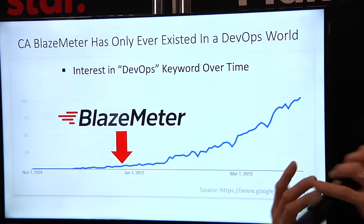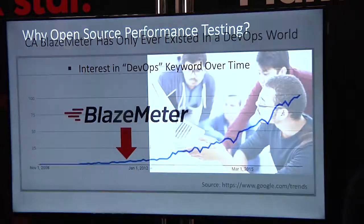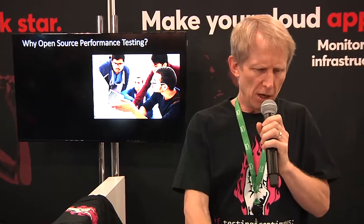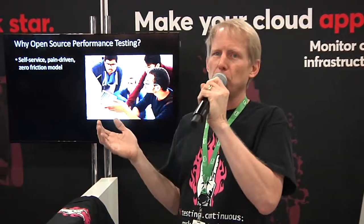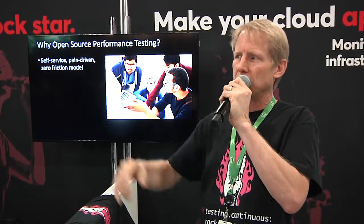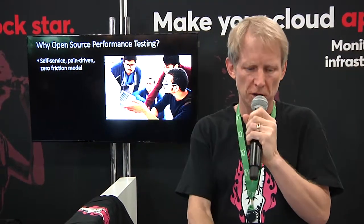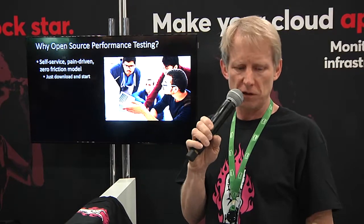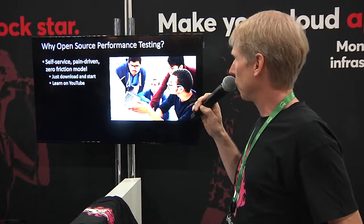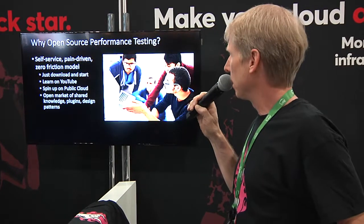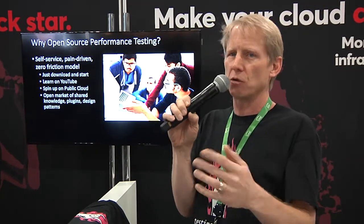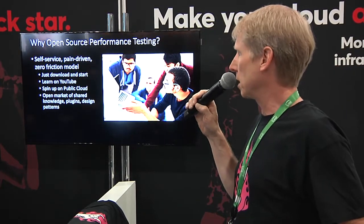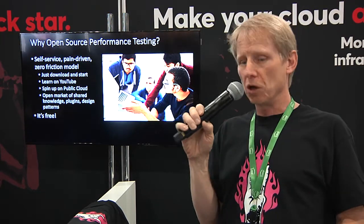It's like in our blood. A big part of that was also really being part of open source. You might ask, well, why open source performance testing? The deal is that developers are taking more control of what they were doing, or teams were shifting out to the edge and not wanting to be dependent on a central organization to do their testing. So they actually just went out and got open source stuff. It was easy — zero friction self-service. Download and start, learn on YouTube, spin it up in a public cloud, and there's an open market of shared knowledge, plugins, and design patterns. People create plugins. It's not behind a paywall, and it's free.